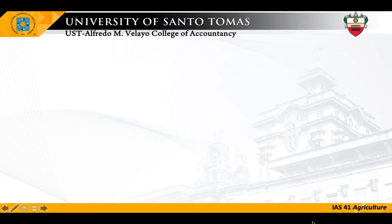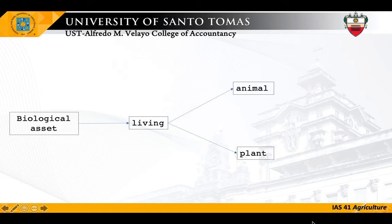According to IAS 41, a biological asset is a living animal or plant. But we should remember that IAS 41 does not only apply to biological assets — it also applies to agricultural produce. To better understand the classifications of assets in IAS 41, which are biological assets and agricultural produce, let's examine the following.